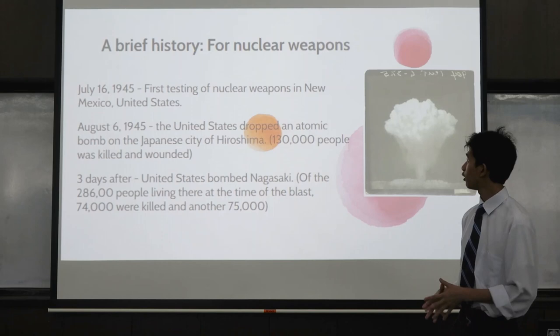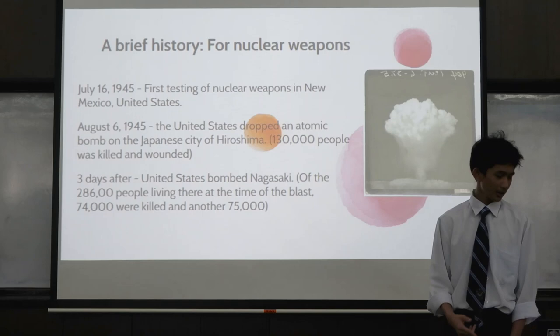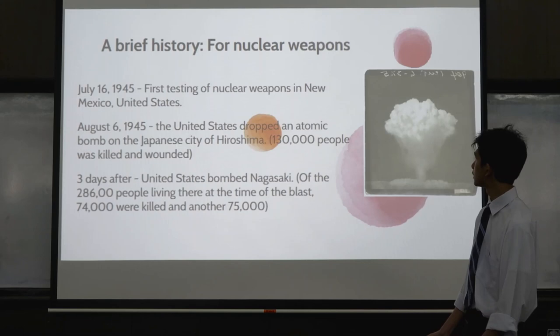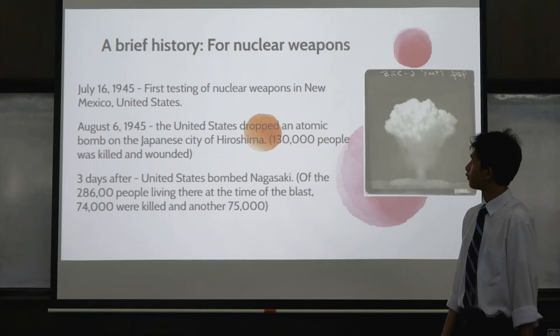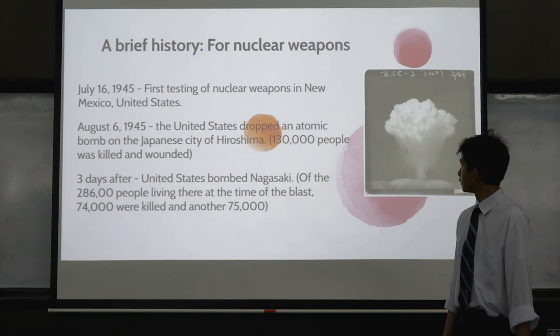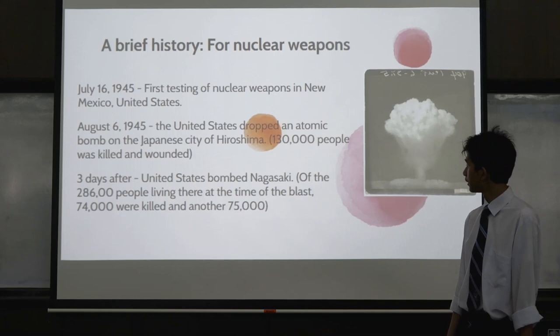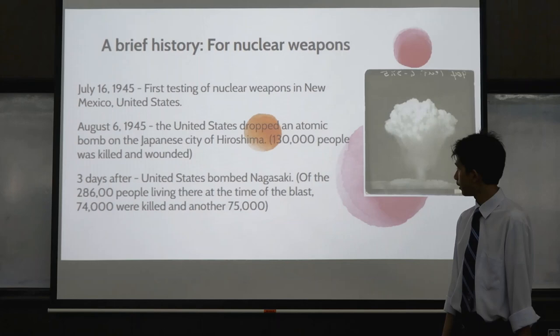There are a lot of types of explosives, but I chose a simple one: nuclear weapons. I think we're all familiar with nuclear weapons, as we hear about them a lot in the context of war. The first testing of nuclear weapons was in New Mexico, United States, on July 16, 1945, during World War II. After the testing, the United States dropped the atomic bomb on the Japanese city of Hiroshima on August 6, 1945, killing and wounding 130,000 people. Three days after that, the United States bombed Nagasaki, where 286,000 people were living at the time — 74,000 were killed and another 75,000 were wounded.